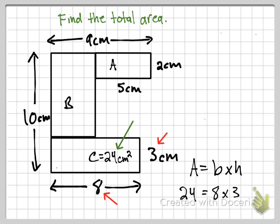Next I'll find the area of rectangle A. The height is 2 centimeters and the base is 5 centimeters. Using area equals base times height, 5 times 2 equals 10. So the area of A is 10 centimeters squared.